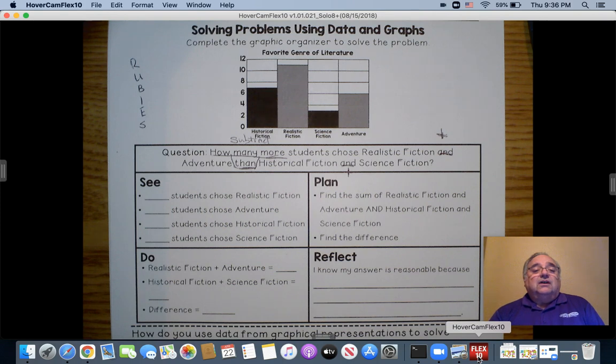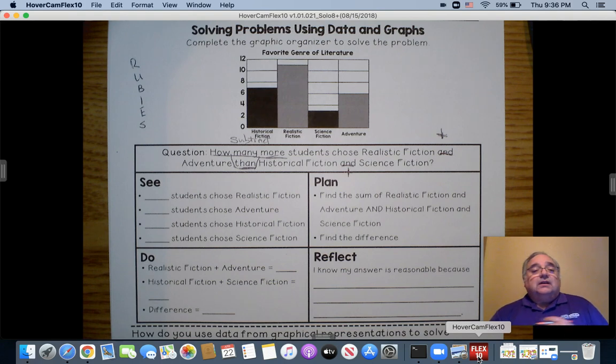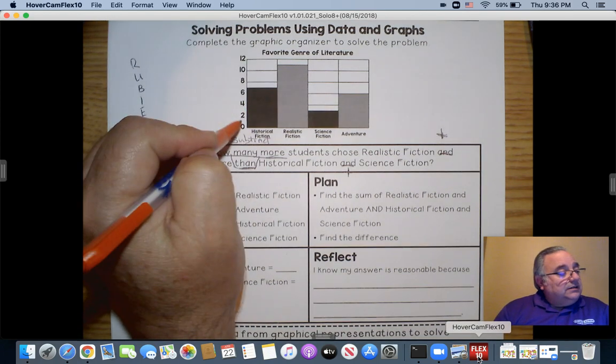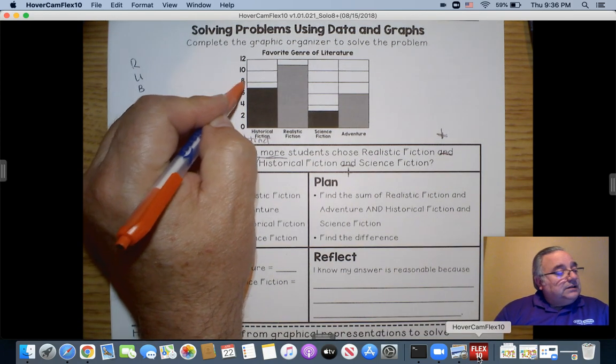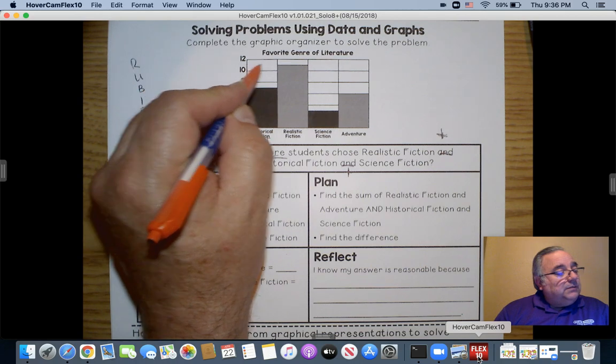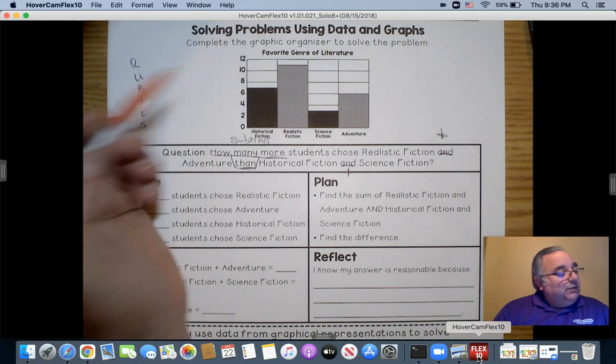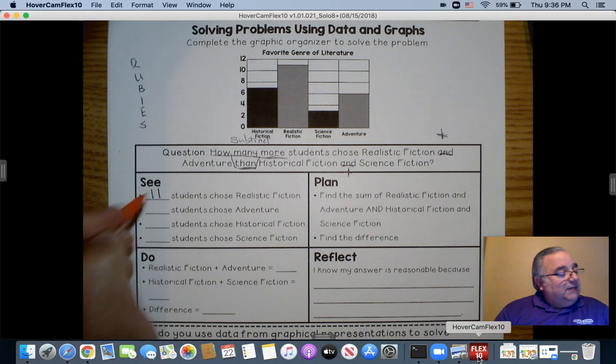So the first part says see, well I'm going to see what students chose realistic fiction. So I see how many were there, then how many students chose adventure, how many students chose historical fiction, how many students chose science fiction. So I'm going to do the first one. I see that, let's see here - two, four, six, eight, ten, twelve, in the middle will be 11 for realistic. So I'm going to put 11 right there.